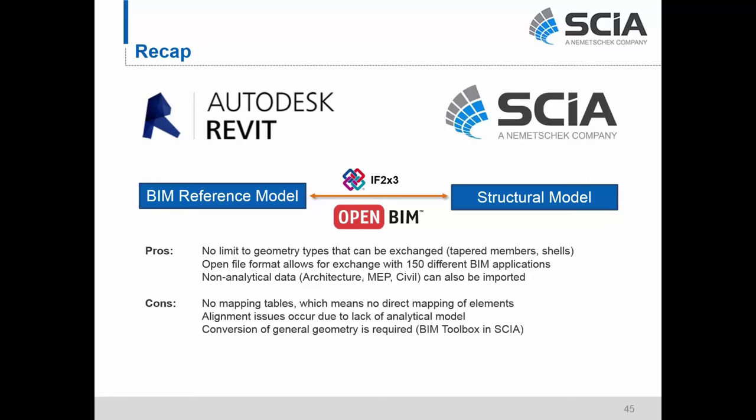Some of the downfalls of this type of exchange: there are no mapping tables, which means no direct mapping of elements. There's also no automatic alignment — you're going to have to pay attention to alignment, possibly using the BIM toolbox like we saw in SIA. Also, since elements are general geometry — general solid elements, not native objects to any software — you're going to have to convert those, either manually like we saw in the video, or trace over them.